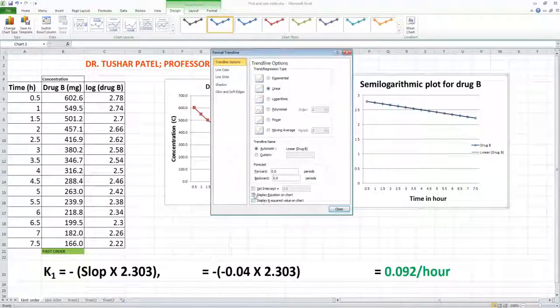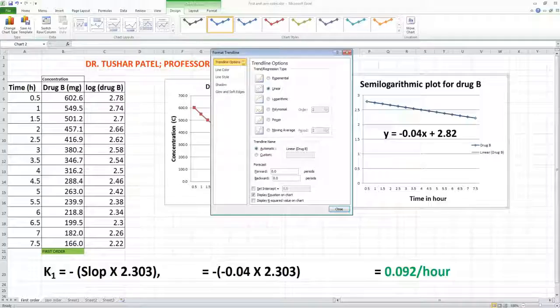Click on the line and you will get this format trendline option, in which you check the box 'display equation on chart.' This will display the equation on the chart.